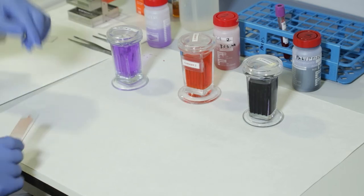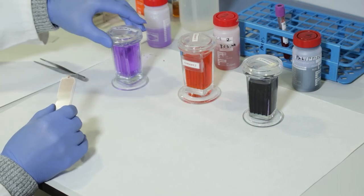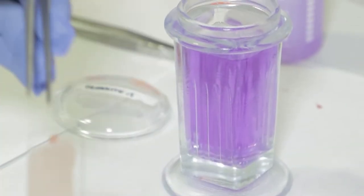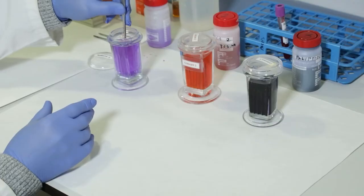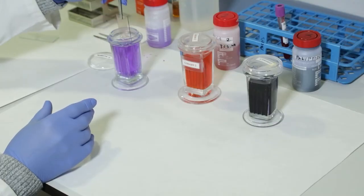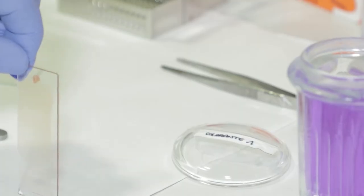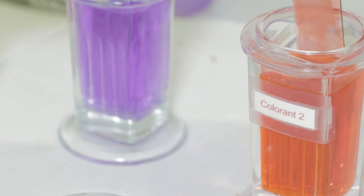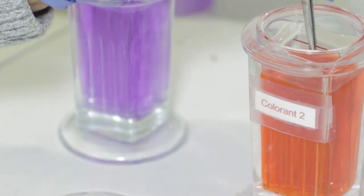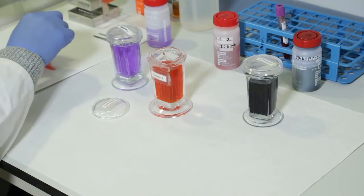The staining pattern is as follows. First, immerse the slide for 5 seconds, 5 immersions of 1 second in fixation solution number 1. Second, repeat the same operation with reagent number 2, which is an acid dye such as eosin.